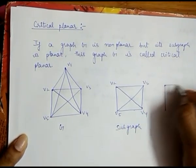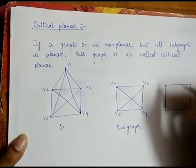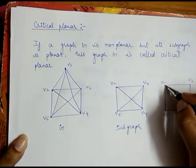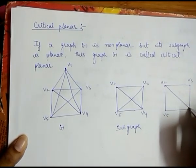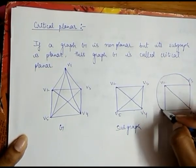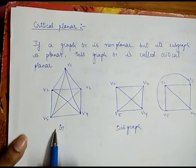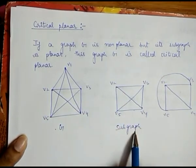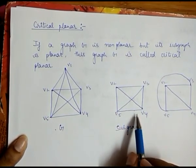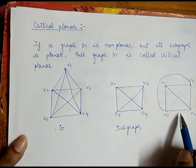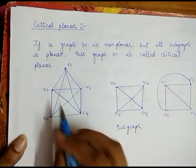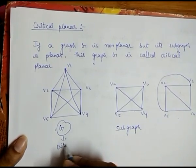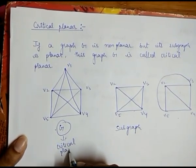If I redraw it without any crossover point — yes, we can redraw it like this. So this graph G, which is non-planar, has a subgraph that becomes a planar graph. Therefore, this graph G is said to be a critical planar graph.